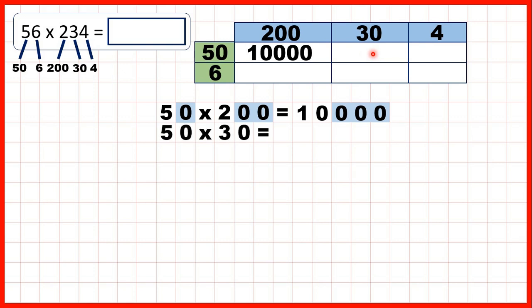Here we need to work out 50 times 30. That's 1,500 because 5 times 3 is 15. And here we have two end zeros in our multiplication question altogether, so we need two end zeros in our answer.